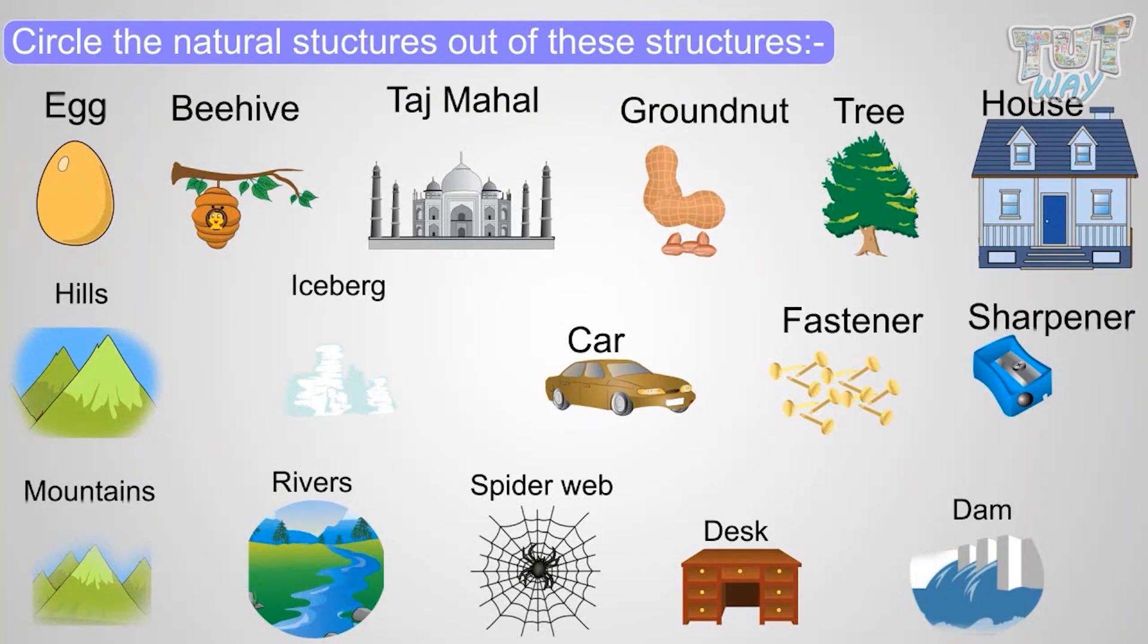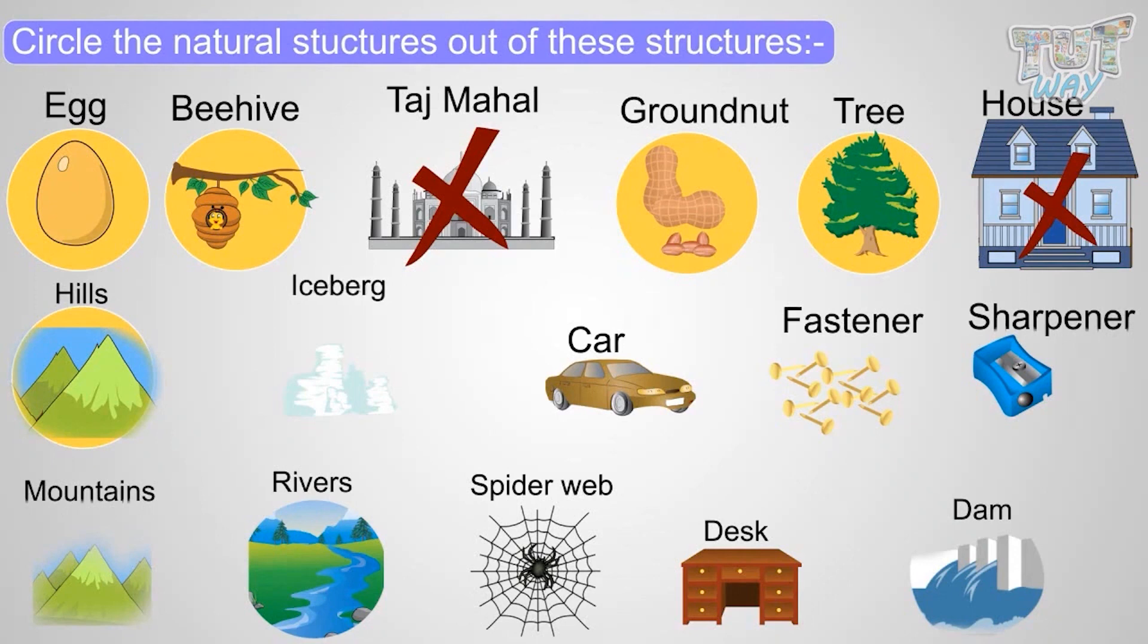Egg, natural. Beehive, natural. Taj Mahal, no, it's not a natural structure. It's a man-made structure. Groundnut, natural. Tree, natural. House, no. Hills, yes. Iceberg, yes, a natural structure.